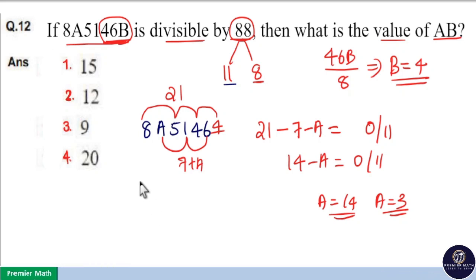Let's check. Here, we need the product of A and B. AB equals—B is 4 here. And if I take A as 3, then 4 times 3 is 12, which is in the option.